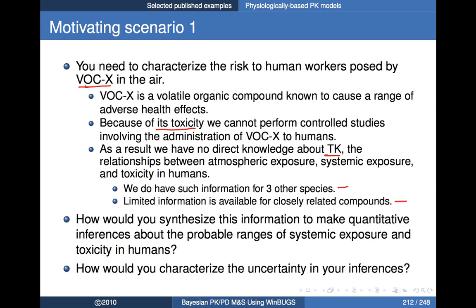Not only do I want point estimates out of that, I want to be able to characterize my uncertainty around these inferences so I can begin to say things about the probable range of toxicity and, more importantly, the probability of having various toxic consequences in humans.